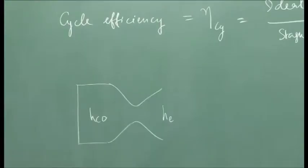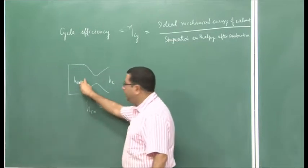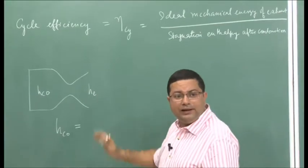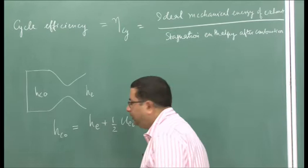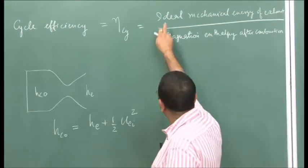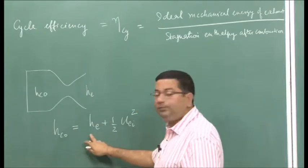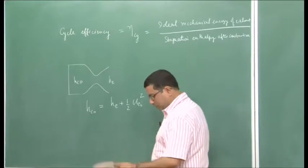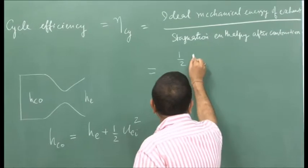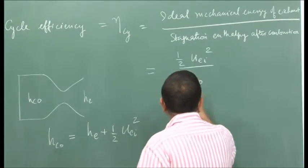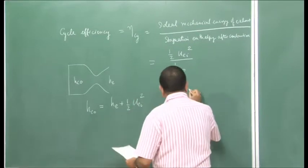If I look at the rocket we have been discussing: this is the combustion chamber and a converging-diverging nozzle. After combustion, the total stagnation enthalpy in the combustion chamber is H_C0, where the subscript naught represents the stagnation state. At the exit, the static enthalpy is H_E. From energy conservation, the total enthalpy equals the static enthalpy plus the kinetic energy term: H_C0 = H_E + (1/2) * U_Ei², where U_Ei is the ideal exhaust velocity.